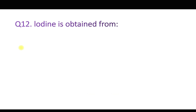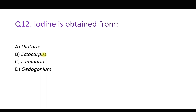Question number twelve: Iodine is obtained from which source? Option A: Ulothrix, B: Ectocarpus, C: Laminaria, and D: Ectodonia. The source of iodine is a brown alga — Laminaria. It is also used as a supplement for the treatment of iodine deficiency.